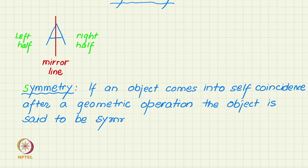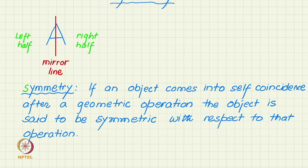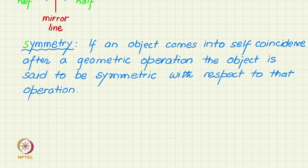It is said to be symmetric with respect to that operation. This is a very general definition of symmetry. We have seen an example of the letter A. Let us explore other letters of the English alphabet.